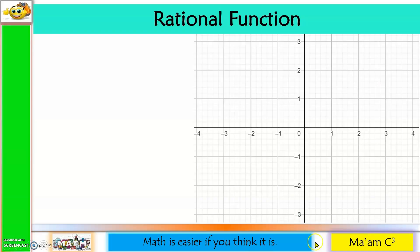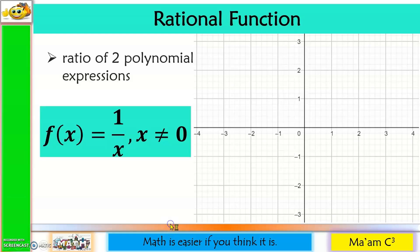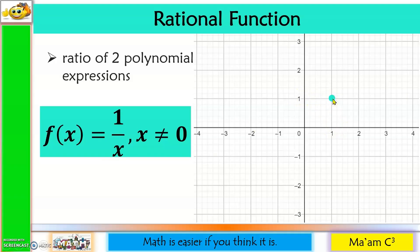Another basic function is the rational function, which is the ratio of two polynomial expressions. The parent function is f(x) = 1/x, where x ≠ 0 — if x is 0, the function becomes undefined. Plotting points: when x = 1, y = 1; when x = 2, y = 1/2. Continuing this gives the graph in the first quadrant.